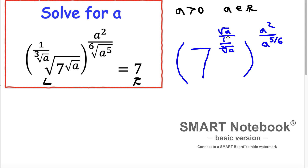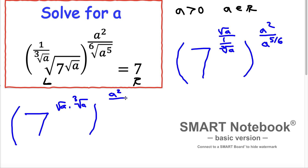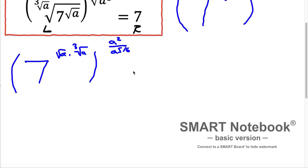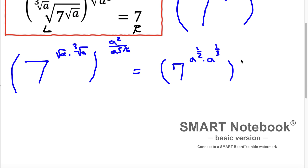I can simplify this a bit further. I can write it in the form 7 in exponent: square root of A times cubic root of A. Since they do not have the same index, I'm going to multiply in terms of the rational exponent. A is going to be in exponent 1 over 2 times A in exponent 1 over 3. I can multiply them because the base is the same, according to the rules of exponents. And this is A squared divided by A in exponent 5 over 6.